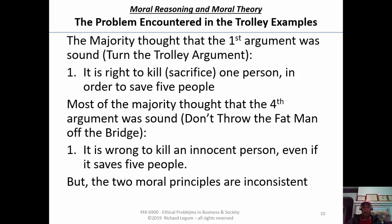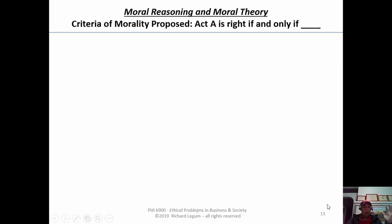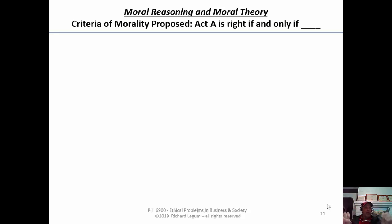How do we solve the problem? Some have suggested that we should look at a moral theory to solve the problem. You see on top it says 'criteria of morality proposed.' This is the format of what we call a criterion of morality. It starts: an act is right if and only if — fill in the blank. And that's how you can summarize a moral theory.